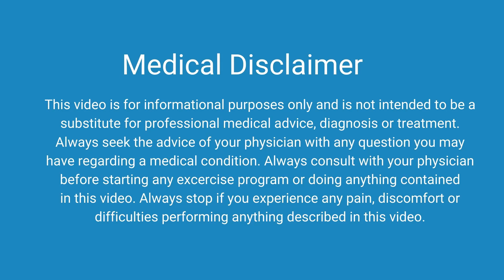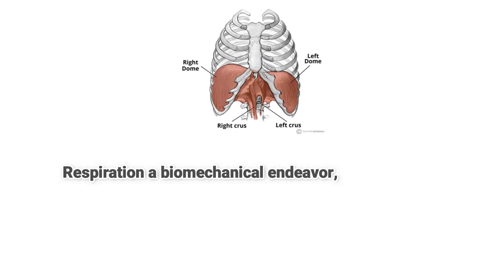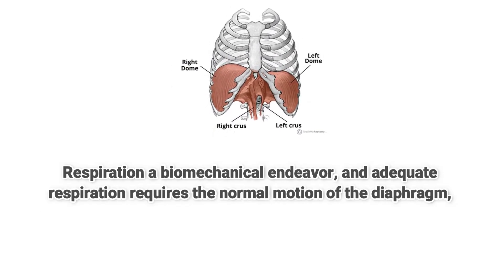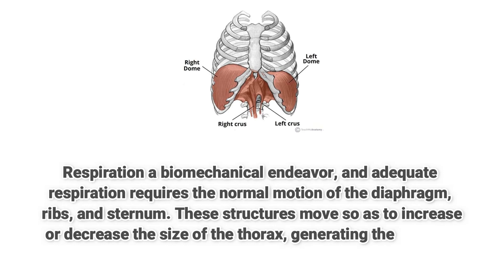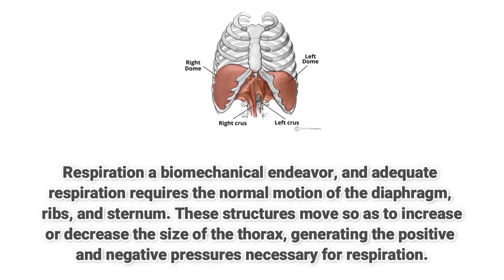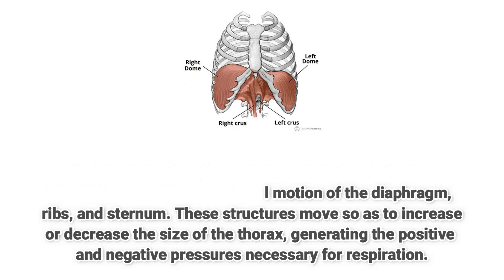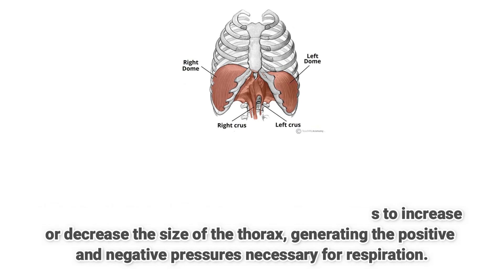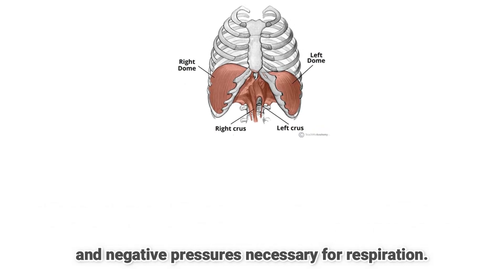Rib dysfunction and diaphragm. Respiration is a biomechanical endeavor — adequate respiration requires the normal motion of the diaphragm, ribs, and sternum. These structures move so as to increase or decrease the size of the thorax, generating the positive and negative pressure necessary for respiration.